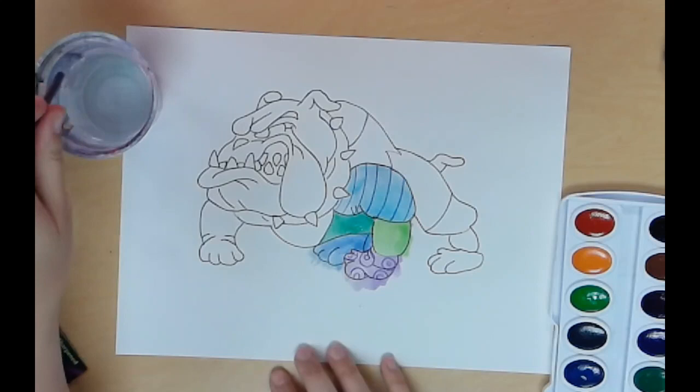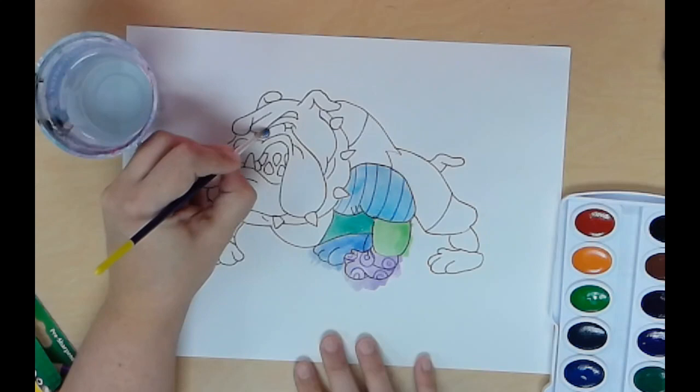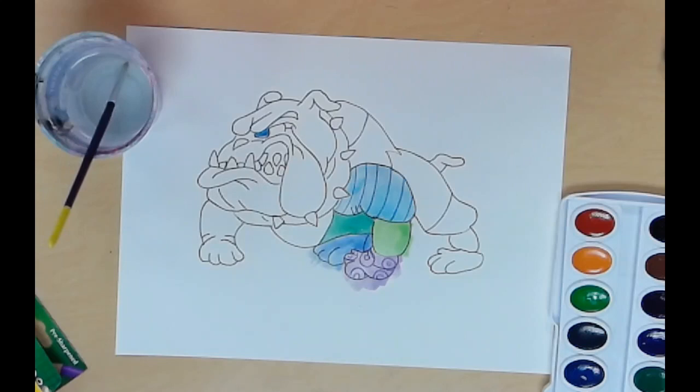This is just my preference: I'm going to leave the spikes white, his teeth white, and the white of his eye white. Just because those are supposed to be white in the photo, and that's how I would want it to be.